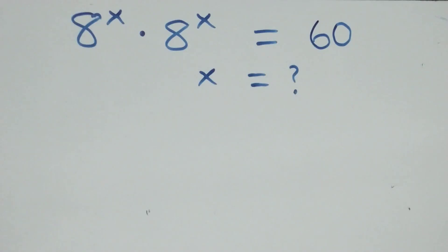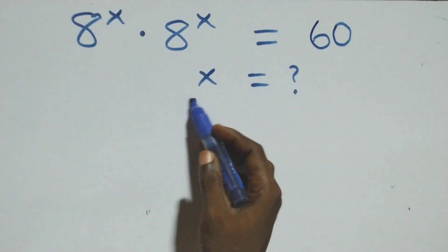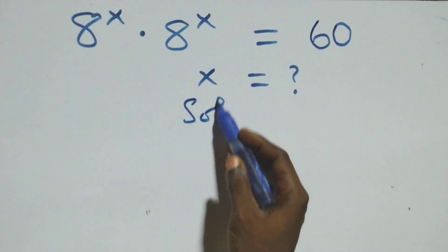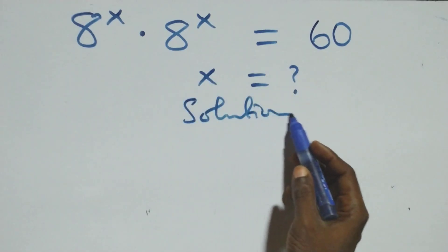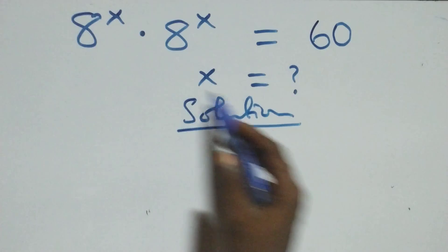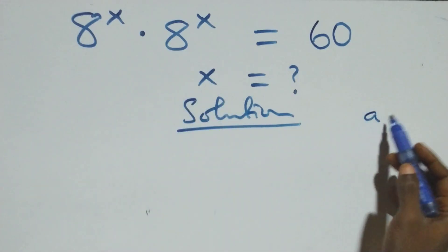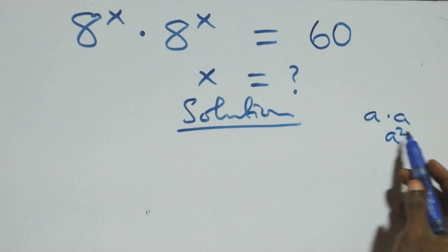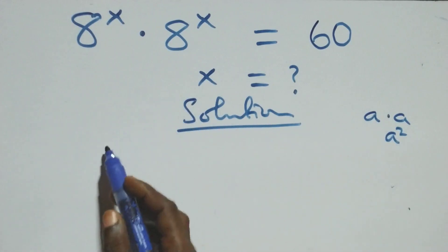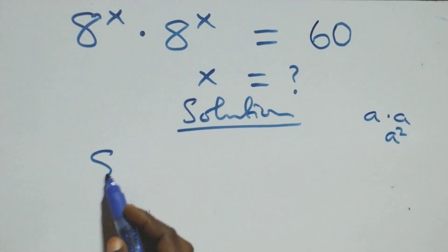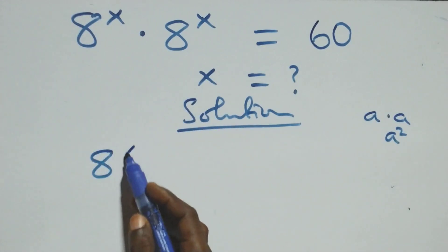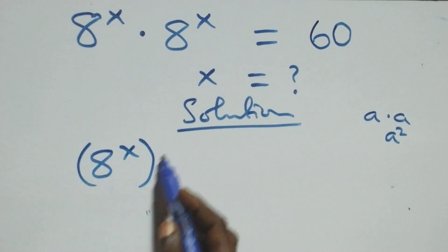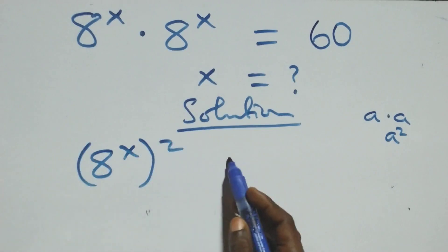Hello, you're welcome. We will solve this exponential equation. From what we have here, this follows when we have a times a, which is the same thing as a squared. Multiplying with the same thing, we can write it as a raised to power x squared equals 68.